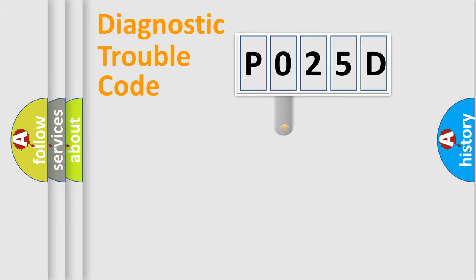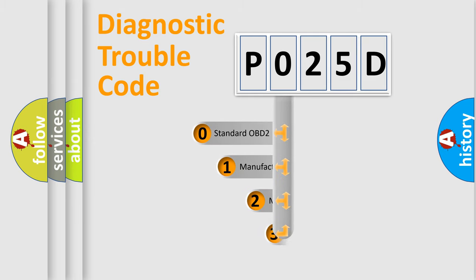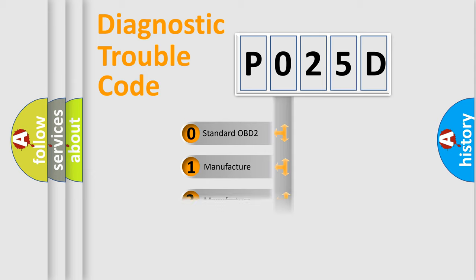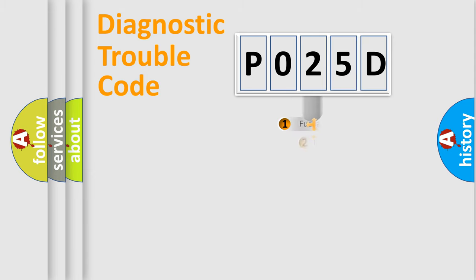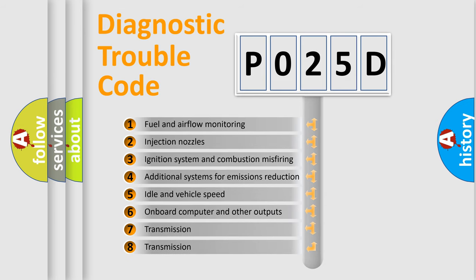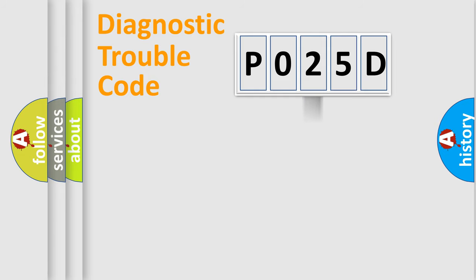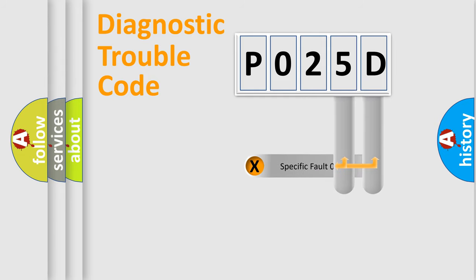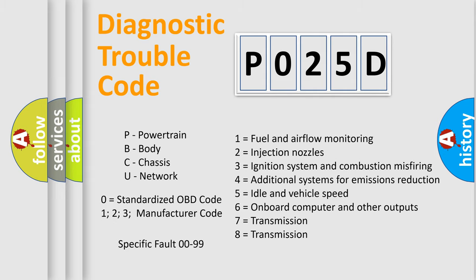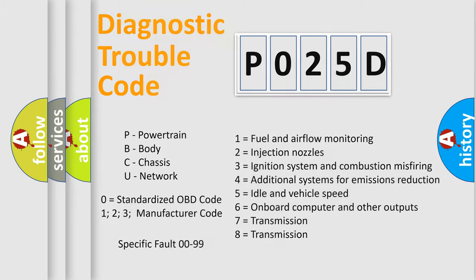This distribution is defined in the first character of the code. If the second character is expressed as zero, it is a standardized error. In the case of numbers 1, 2, or 3, it is a more specific expression of a car-specific error. The third character specifies a subset of errors. This division is valid only for the standardized DTC code, and only the last two characters define the specific fault of the group.